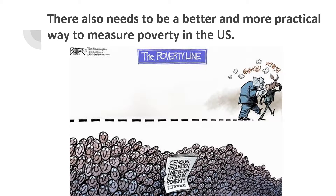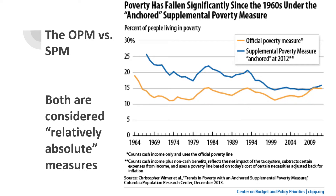We also believe that there needs to be a better, more practical, and more effective way to measure poverty in the United States. The original poverty measurement through the government was the OPM, but the SPM was later developed to cover several flaws of the OPM, such as geographical differences, differences in family composition, and what is actually counted as income. The SPM also accounts for necessary health, transportation, and child care expenses, allowing the government to better gauge poverty and funnel money where it will be most effective.